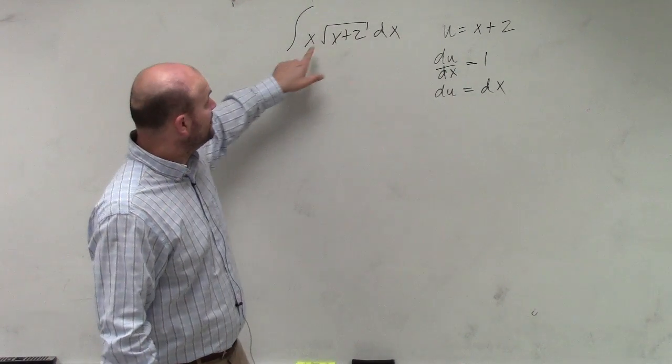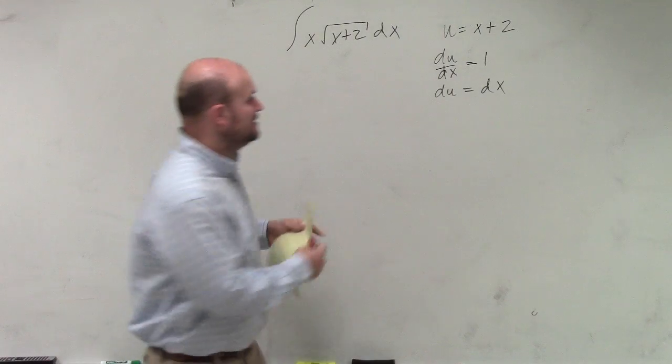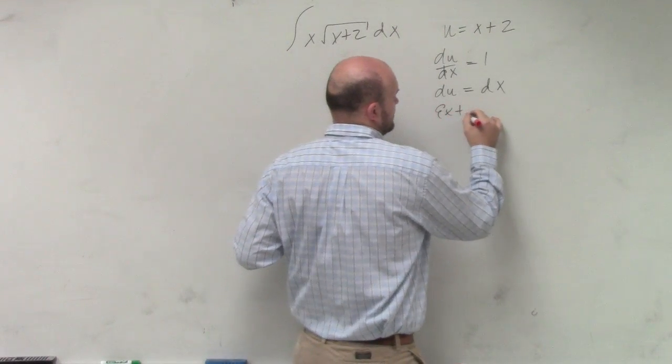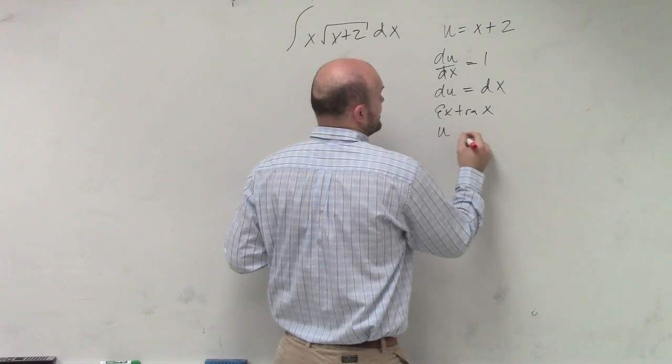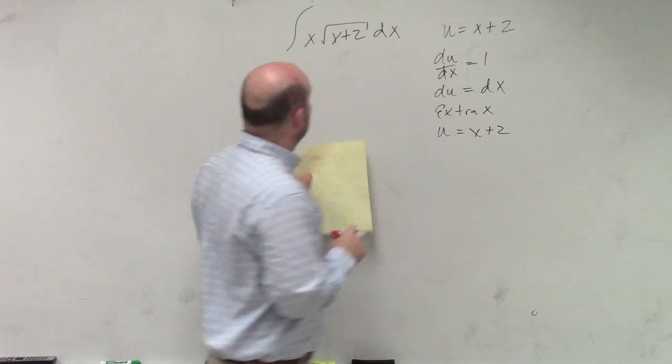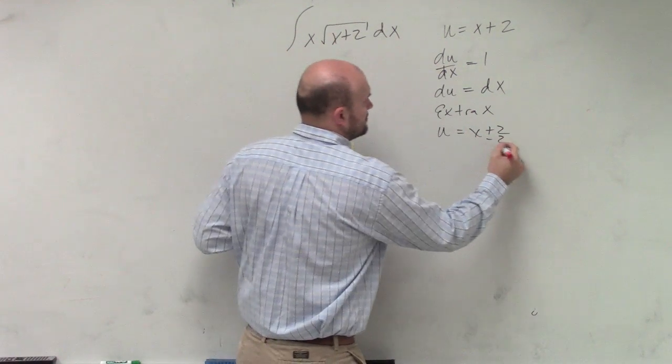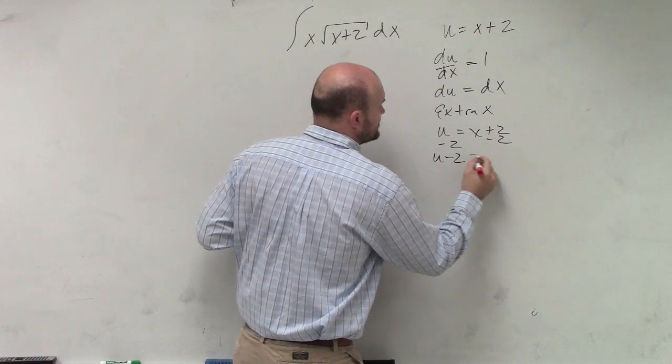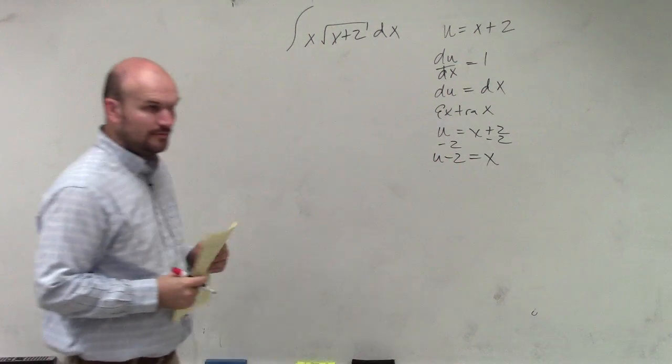And great, I have my dx, but I do have an extra x, so I'm just going to write extra x, and I'll say u equals x plus 2, and then I'm just going to go ahead and solve for x so I can replace that. So u minus 2 is equal to x, okay?